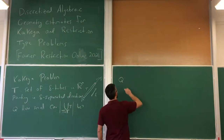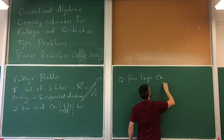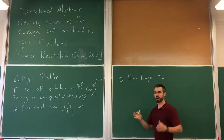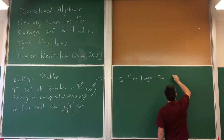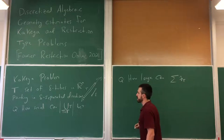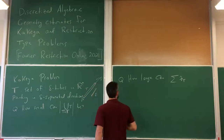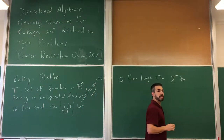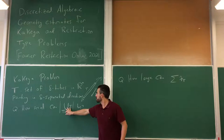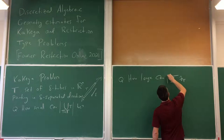A second question, closely related to the first, is how large can the Lp norm of the sum of characteristic functions of the tubes be. The L1 norm is just the sum of the volumes of the tubes. If p is bigger than 1, then the Lp norm measures in some way how much these tubes are overlapping — so if the union has small volume, we expect the sum of characteristic functions to have large Lp norm when p is bigger than 1.